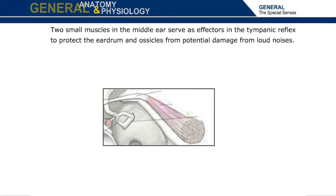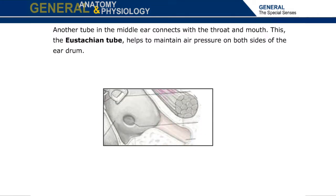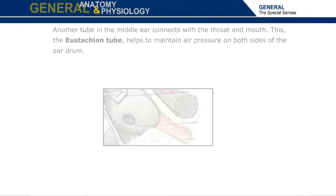Two small muscles in the middle ear serve as effectors in the tympanic reflex to protect the eardrum and ossicles from potential damage from loud noises. Another tube in the middle ear connects with the throat and mouth. This, the Eustachian tube, helps to maintain air pressure on both sides of the eardrum.